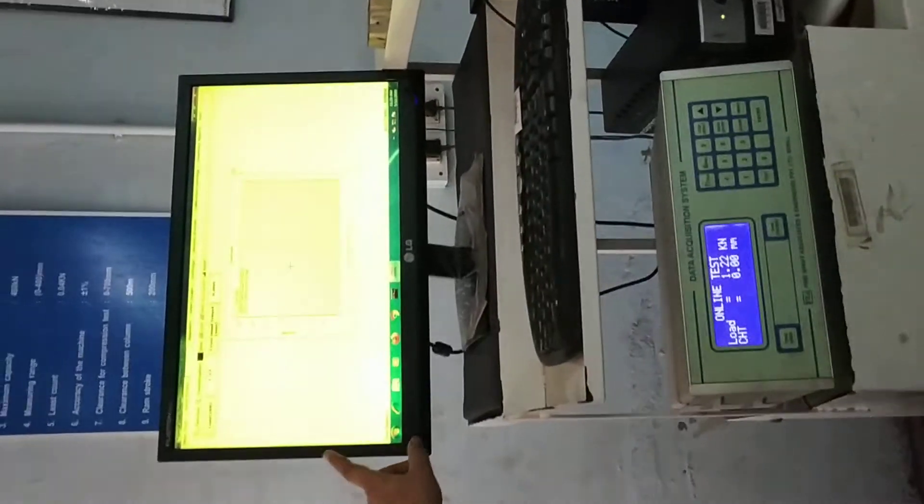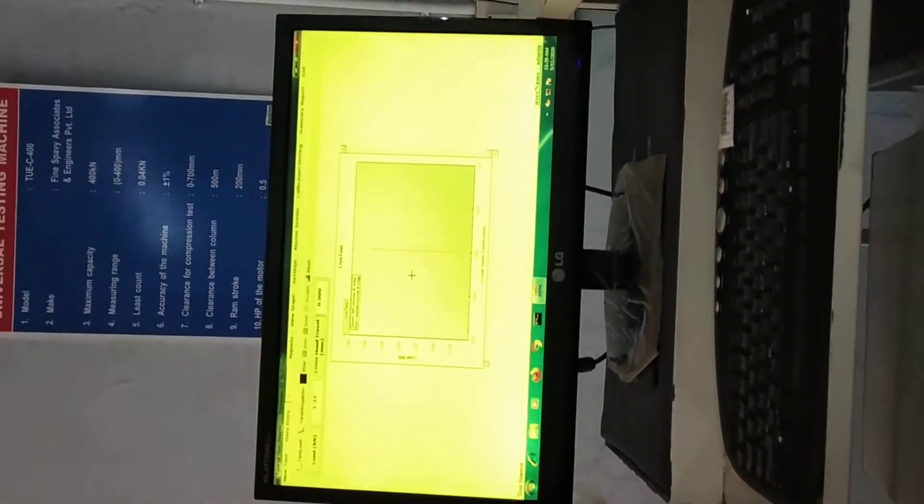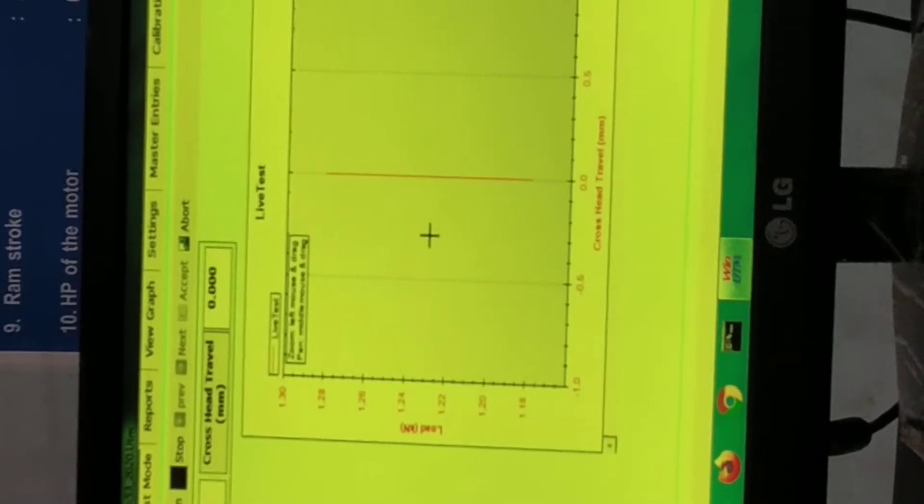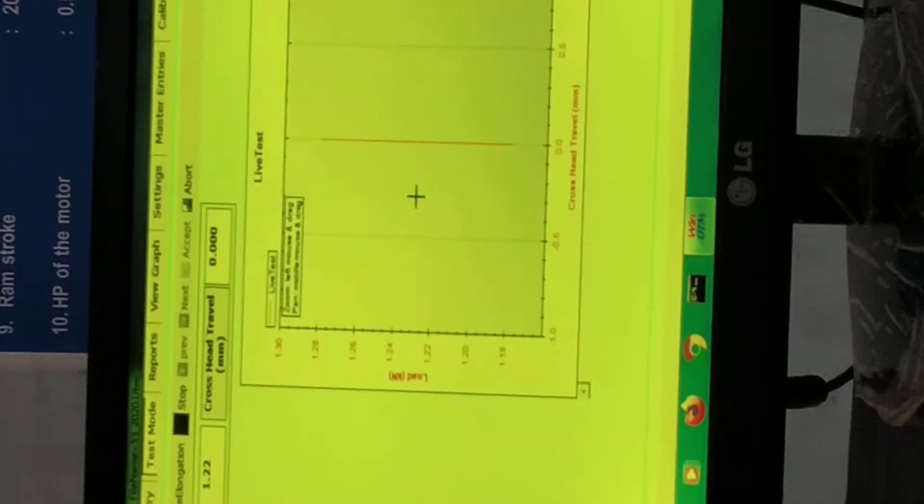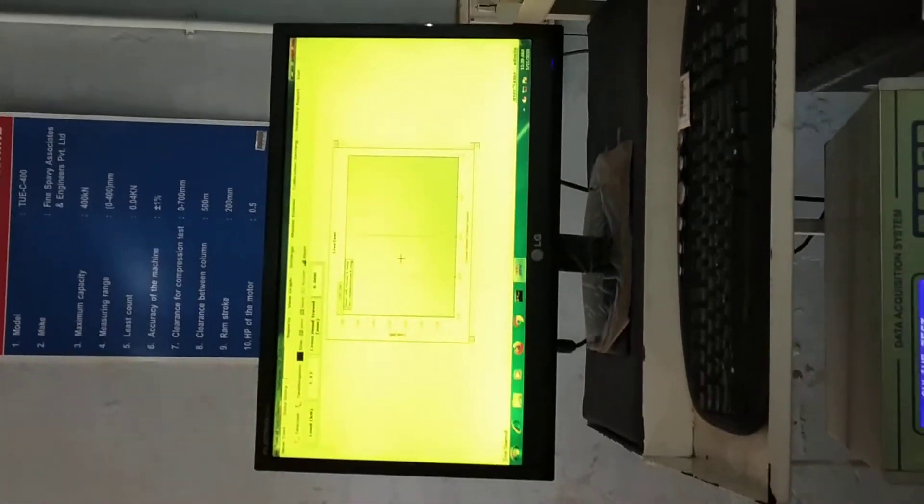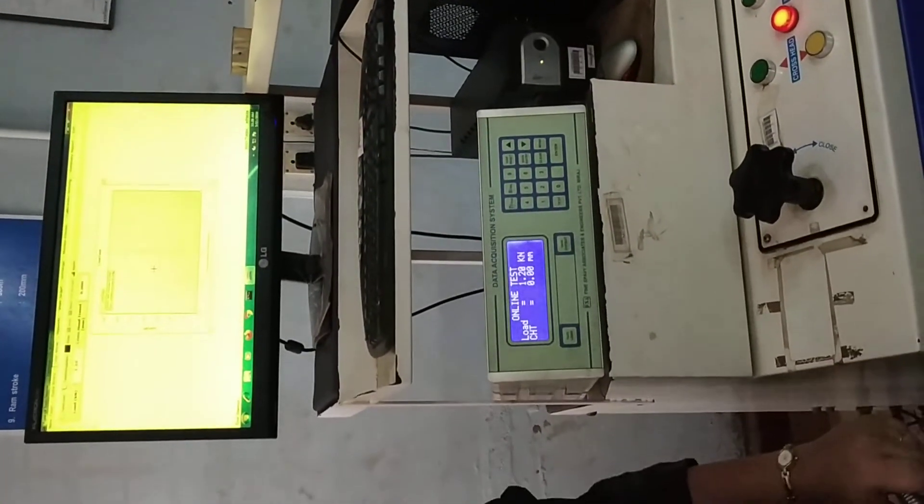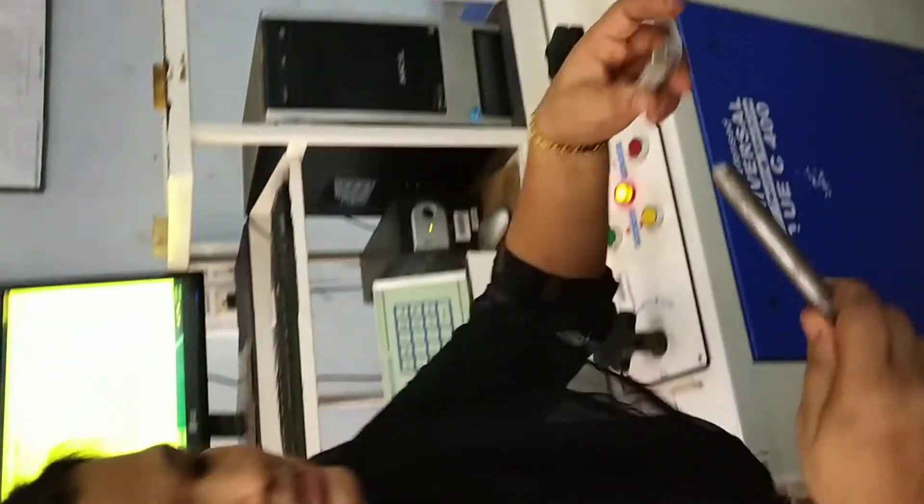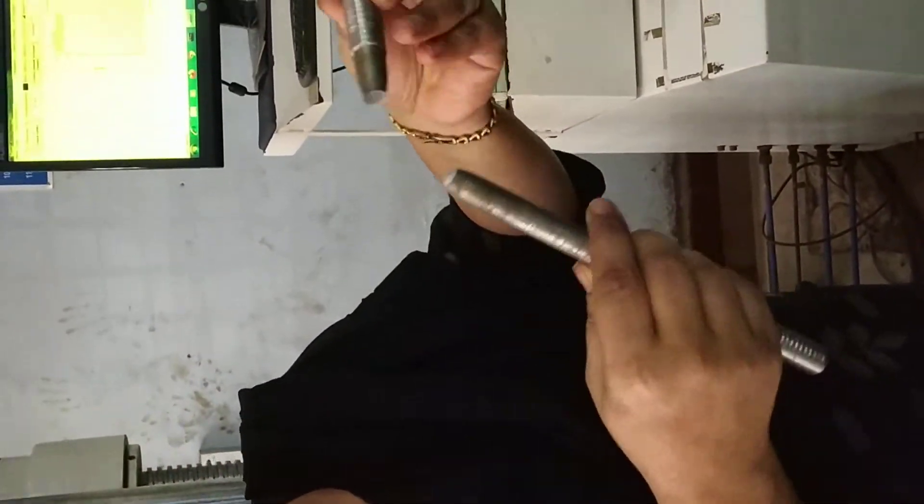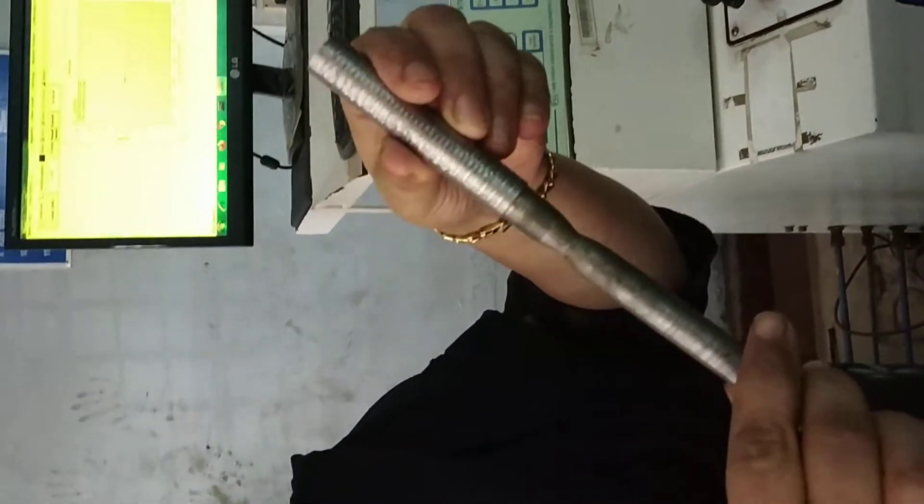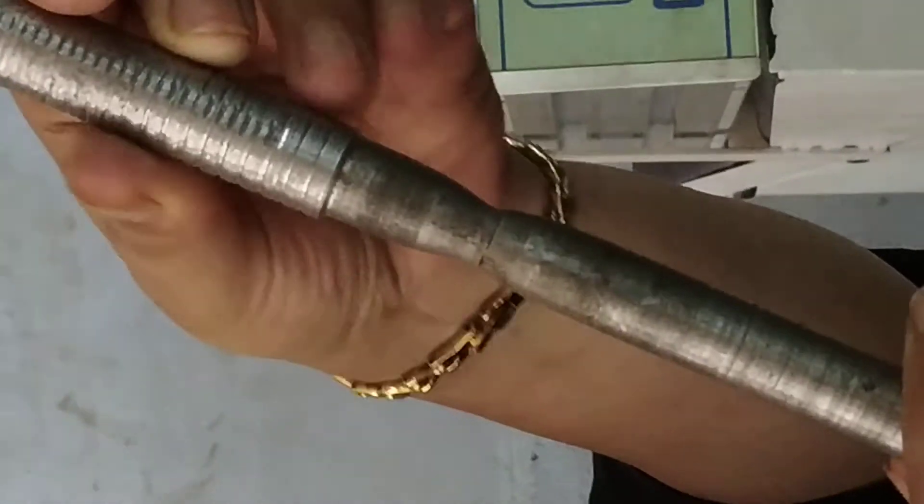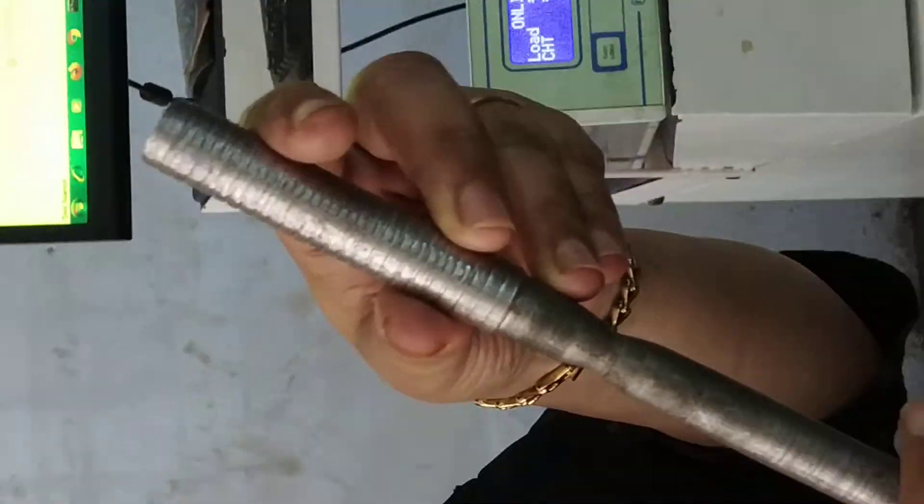On this monitor we can see the graph of load versus crosshead travel. From this, when the load is applied, we will be able to see all the points—the elastic point, yield point, and ultimate stress. When the specimen breaks, we will see this cup and cone arrangement of the specimen is formed. From this we will be able to calculate the stresses at different points.